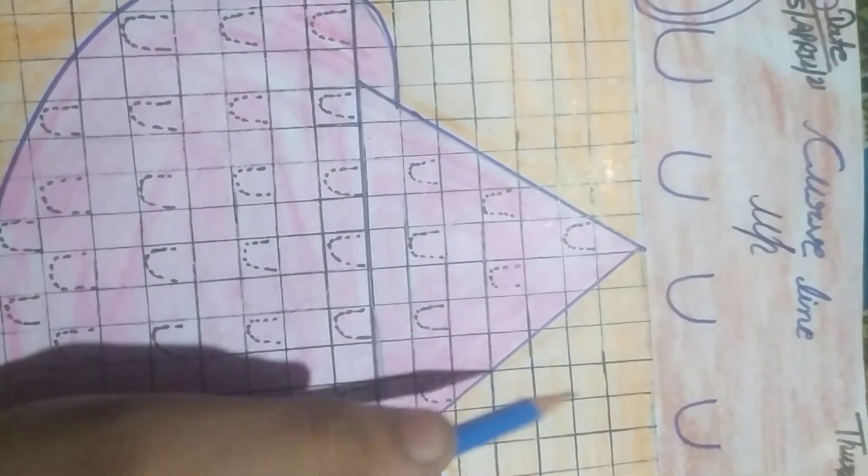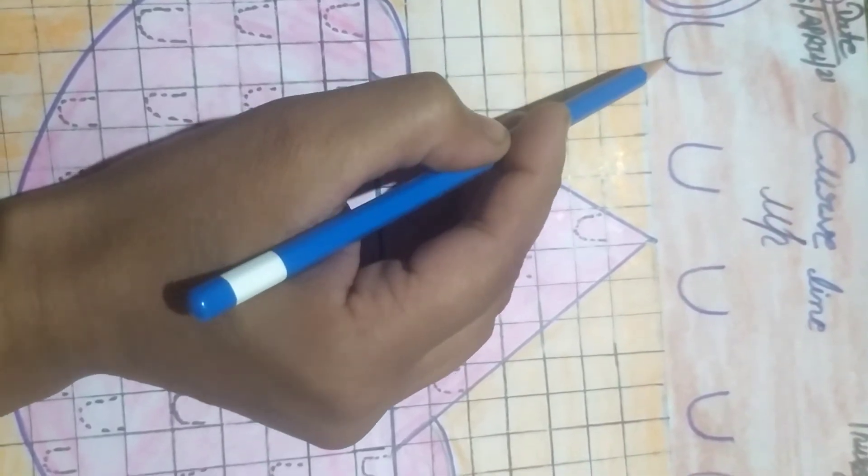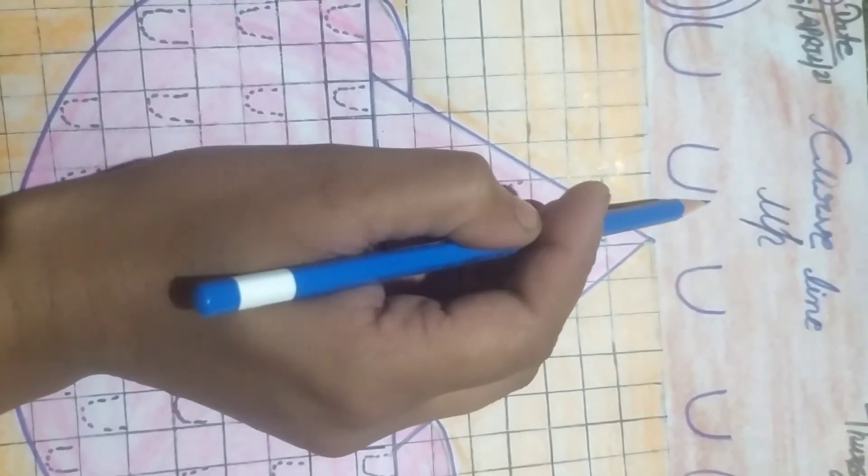Curved lines. अब, मतलब की, यह देखिए, यह जो बने हुए है, यह आपको जो example दिया हुआ है उपर की side में, इसको बोलते हैं curved line. ठीक है?